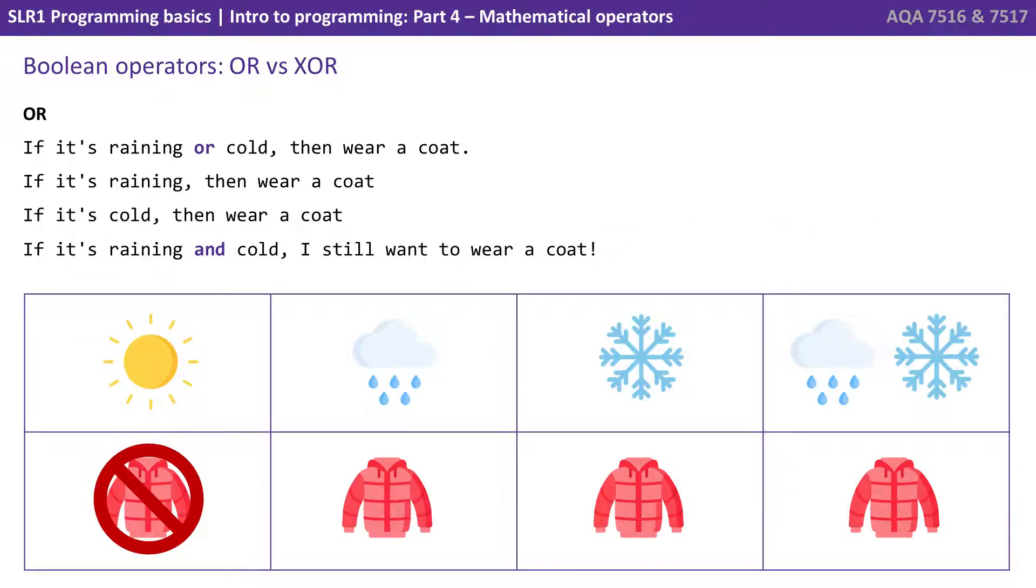So here's our or operator. If it's raining or cold, then wear a coat. So if we look at our diagram at the bottom, we're saying if it's raining, wear a coat. If it's cold, wear a coat. If it's raining and cold, I still want to wear a coat. Any of those situations. It's only if it's not raining, and also it's not cold, that I don't wear a coat.